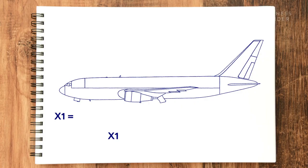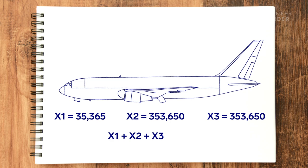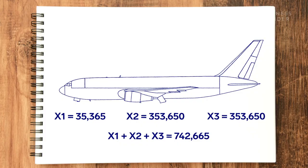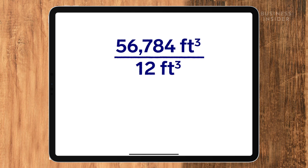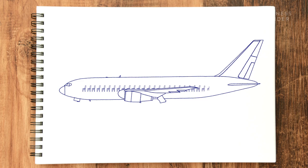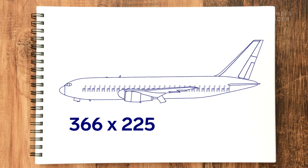The grand total is 35,365 plus 353,650 plus 353,650, which equals 742,665. But the plane actually has 366 seats, so my last step is to divide the total cubic feet by the cubic feet of a golf ball. With an airliner, we have 56,784 cubic feet divided by 12 cubic feet, giving 4,732. Then 366 seats times 225 golf balls per seat equals 82,350.